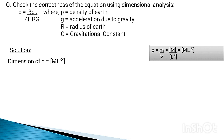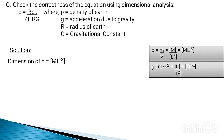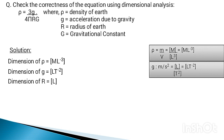For the dimension of g, we have the unit of g as metres per second squared. In dimensional form, metres can be written as L and seconds squared as T². So the dimension of g is LT⁻². Similarly, r is the radius of Earth, which is measured in length, so the dimension of r equals L.